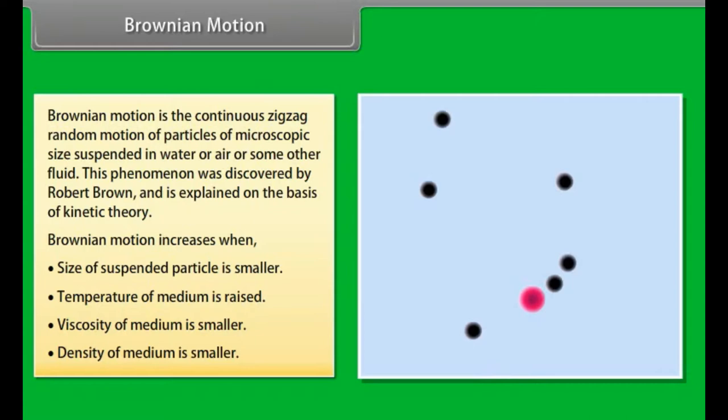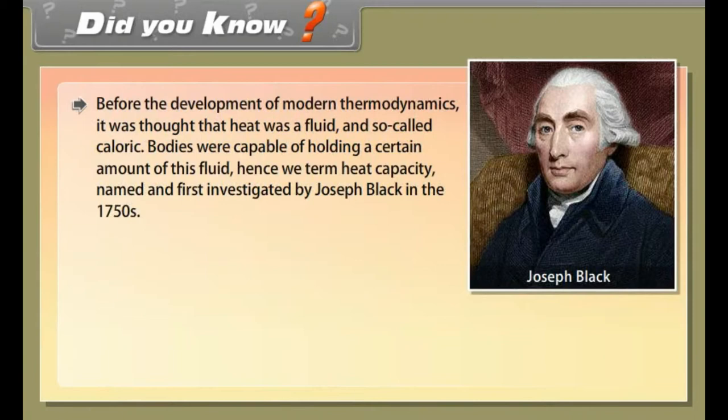Before the development of modern thermodynamics, it was thought that heat was a fluid called caloric. Bodies were capable of holding a certain amount of this fluid, hence we have the term heat capacity, named and first investigated by Joseph Black in the 1750s.